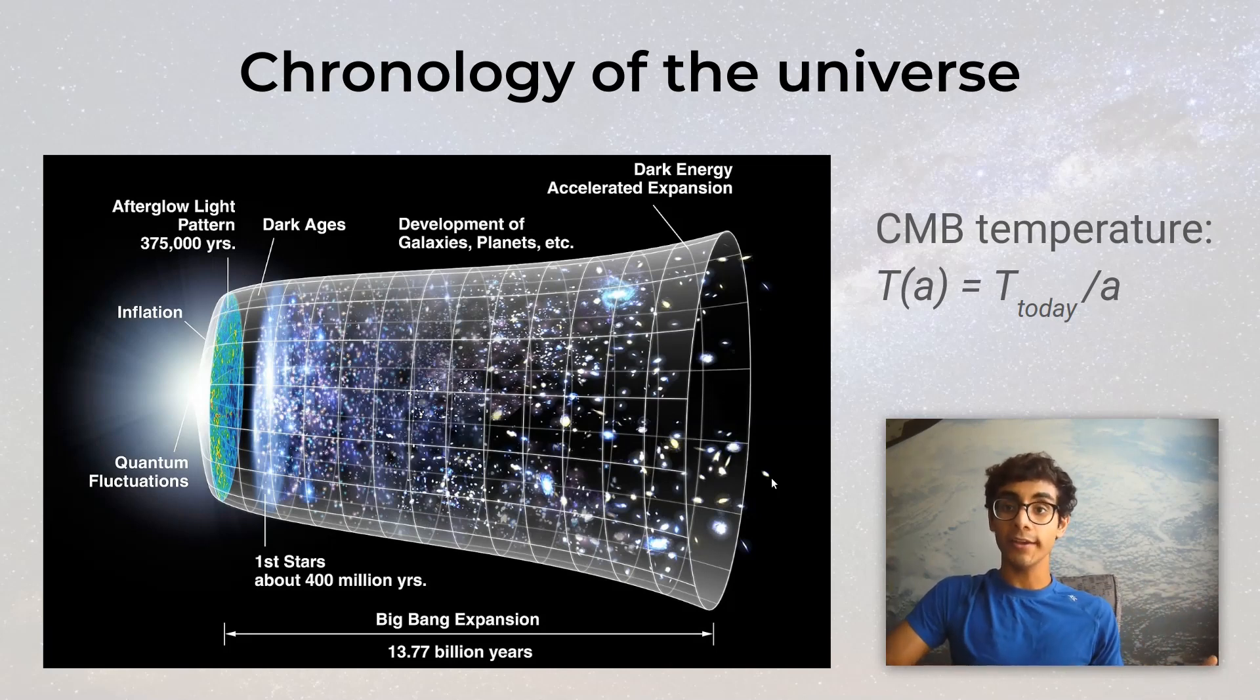This gas of particles was opaque, which means that all the photons produced by this hot gas were basically bouncing around between all the particles, kind of like the inside of a star, except it's the whole universe. Just like a star, the radiation produced by all these hot particles was a black body spectrum. As the universe expanded, the temperature of this hot gas cooled, and the black body spectrum reflected that.